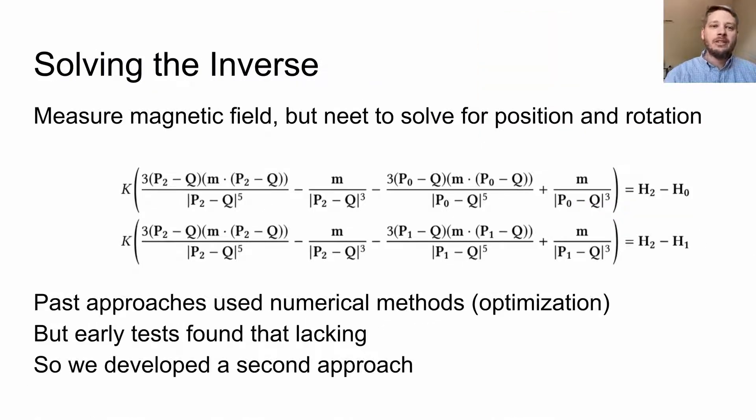The problem is we need to solve the inverse of this equation. We're given the magnetic field reading from the sensors and have to solve for position. Past approaches used numerical optimization methods. In early tests, we found this very lacking, most likely because this equation is so complex. So we developed a different approach.